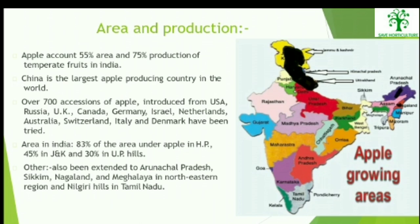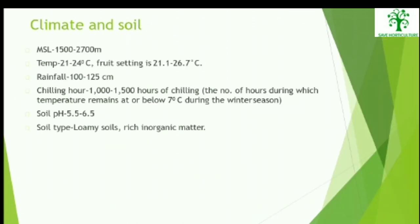Apple accounts for nearly 55% of the area and 75% production of temperate fruits in India. China is the largest apple-producing country in the world. The area under apple productivity in India includes 83% in Himachal Pradesh, 45% in Jammu and Kashmir, and 30% in the hills of Uttar Pradesh.